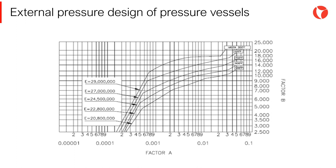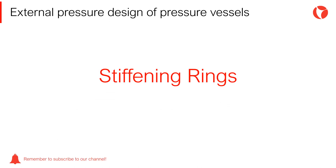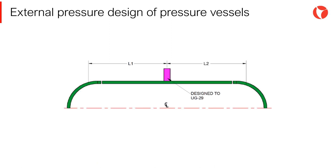Obviously, the diameter and length of the vessel cannot be changed, but the distance between lines of supports can be changed. Increasing the shell thickness to withstand the external pressure requirements won't always be economical. External or internal stiffening rings constitute a very good alternative for the vessel to withstand the external pressure requirements. Shortening the distance between support lines makes the vessel shell more stable — the simply supported beam is shorter this way, thus more resistant to external loads.